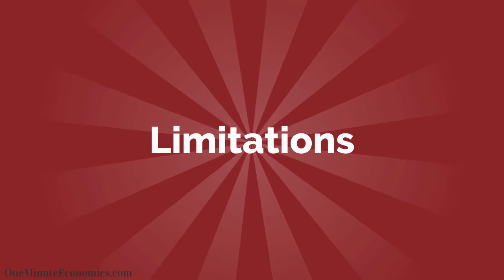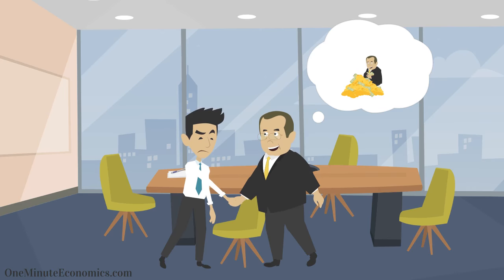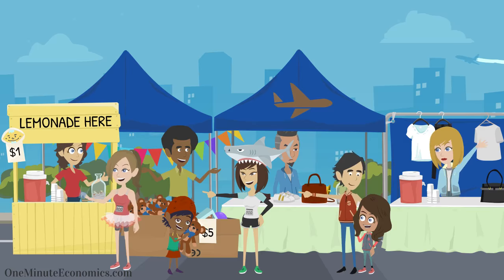Unfortunately, there are limits involved, such as: 1) John eventually needing more space, 2) his supplier running out of inventory, forcing him to buy from more expensive vendors, 3) the local market being saturated, making it necessary to find customers in other regions, with shipping costs added to the mix, and so on.